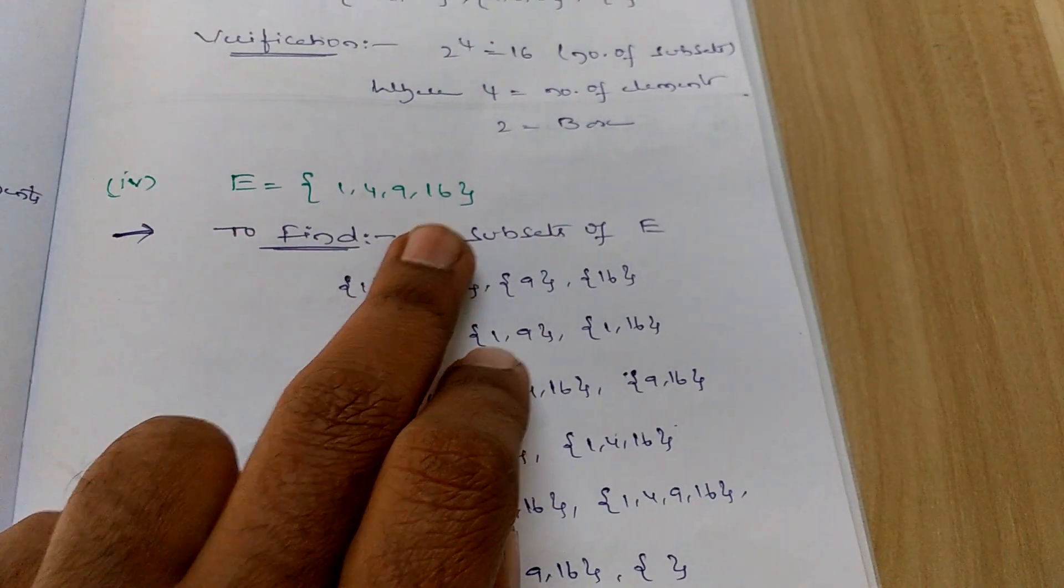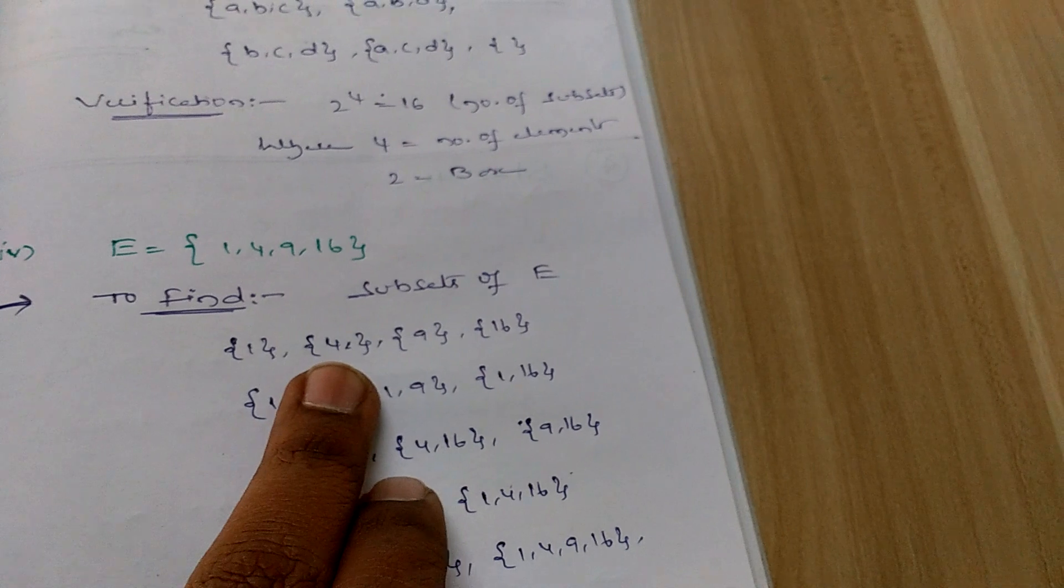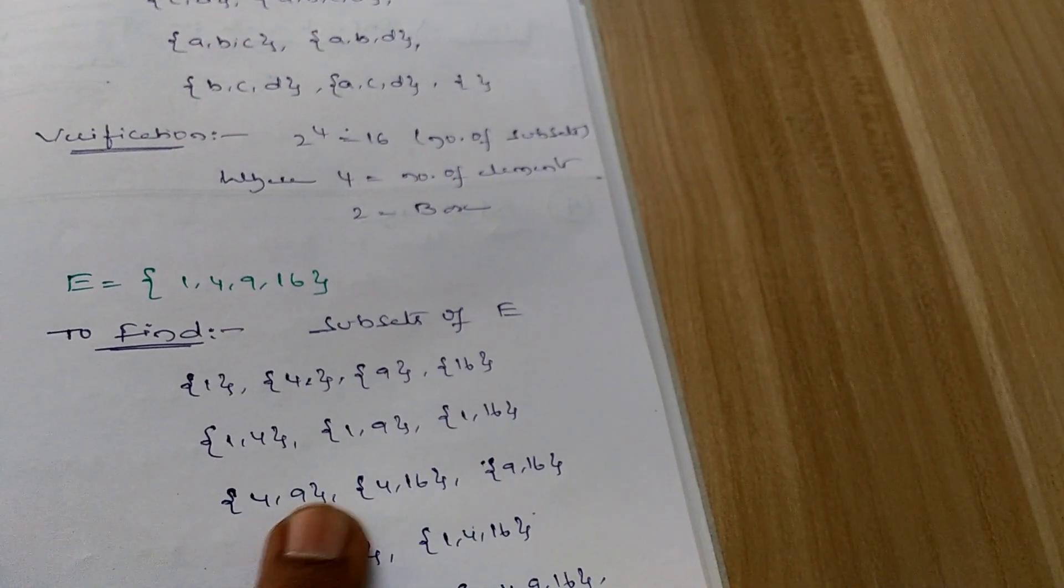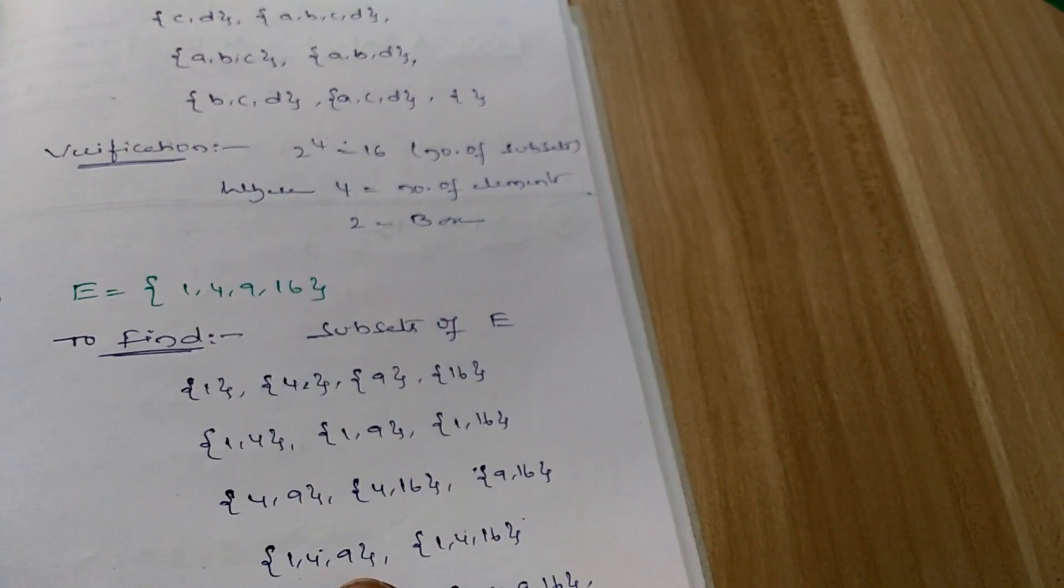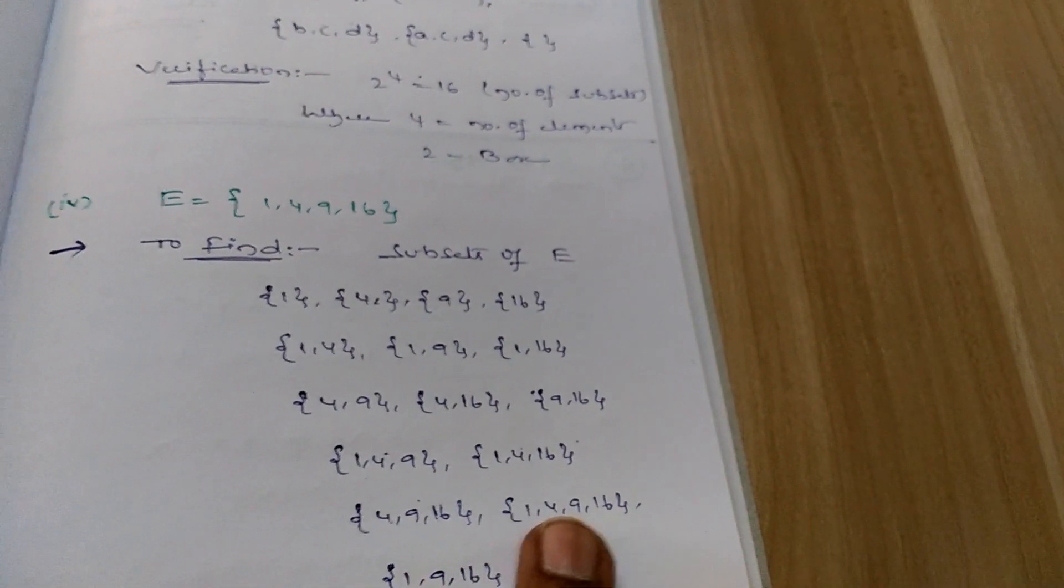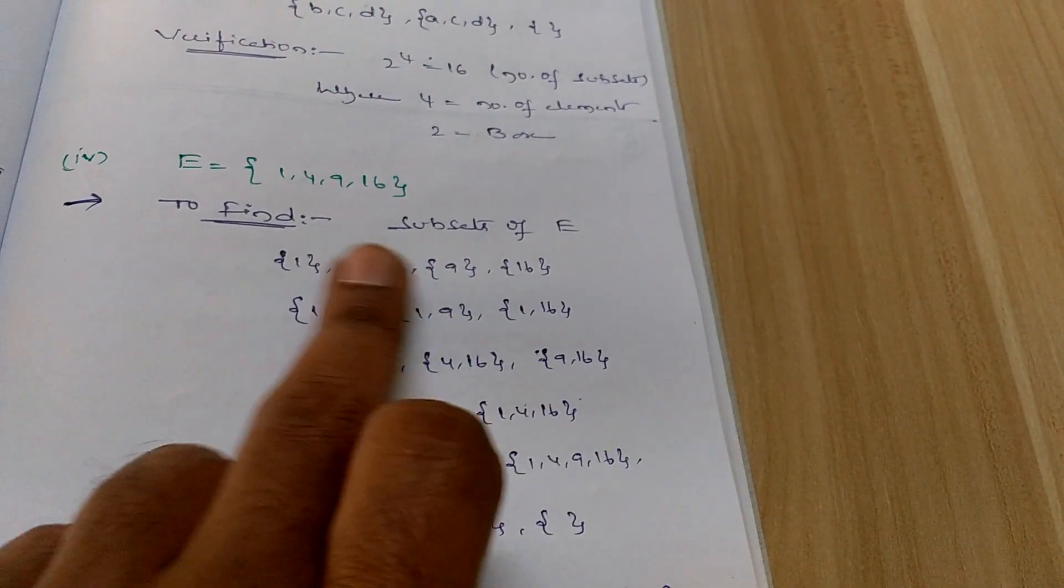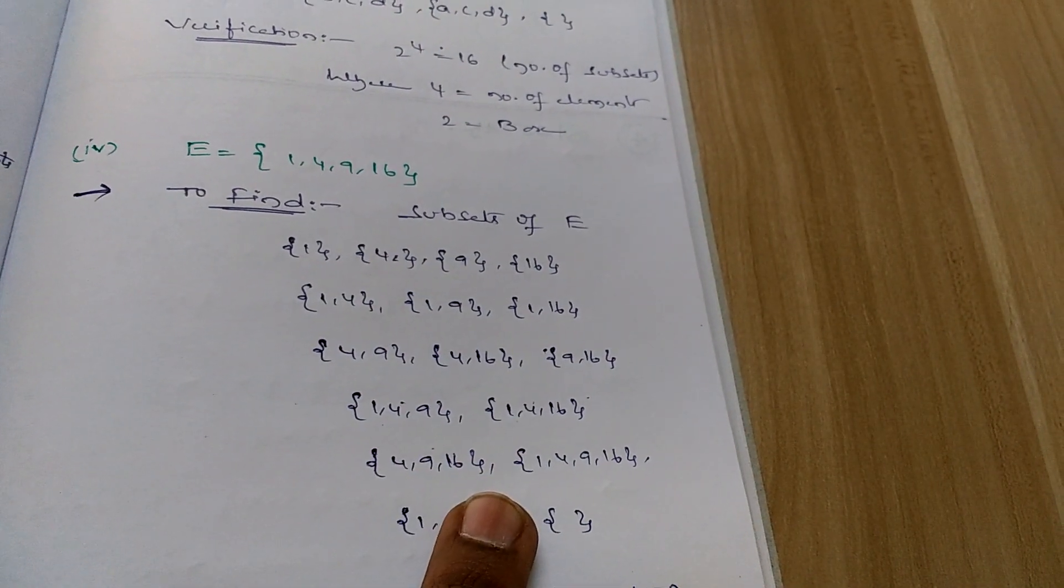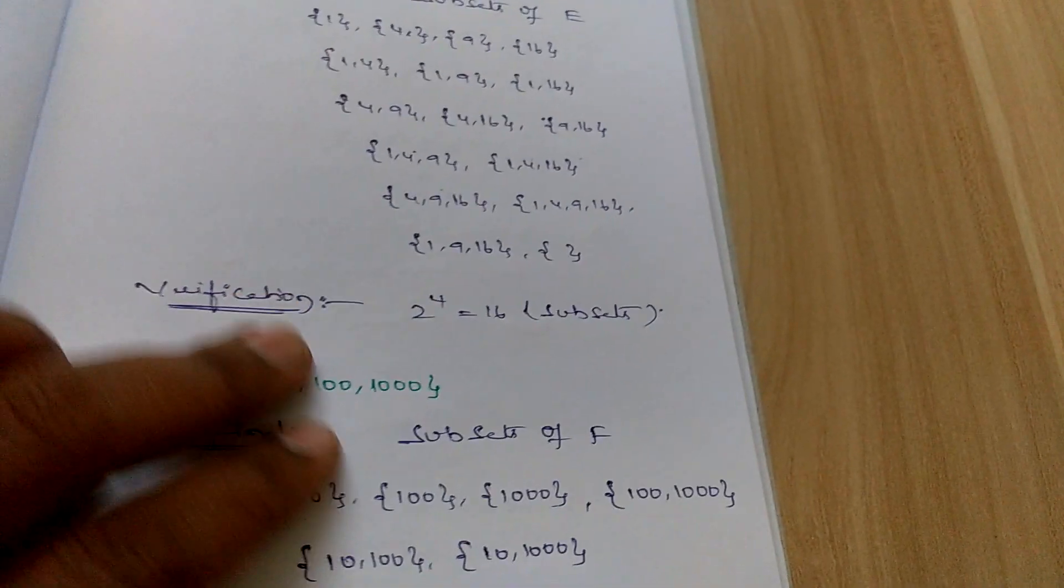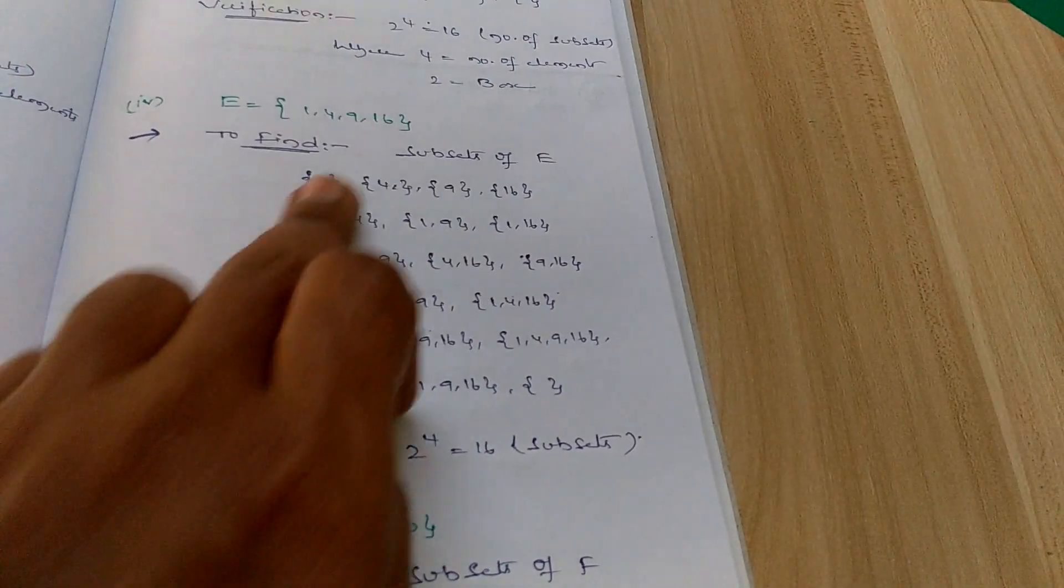Set F equals {1, 4, 9, 16}. What are the subsets? {1}, {4}, {9}, {16}, {1,4}, {1,9}, {1,16}, {4,9}, {4,16}, {9,16}, {1,4,9}, {1,4,16}, {4,9,16}, {1,4,9,16}, and the null set. These are all the possible subsets. Total 16 you get because 4 elements are there. 2^4 gives you 16, so you will get 16 subsets.